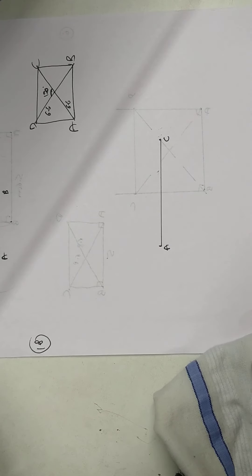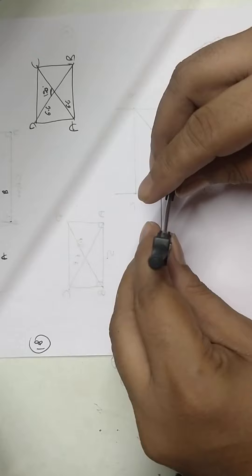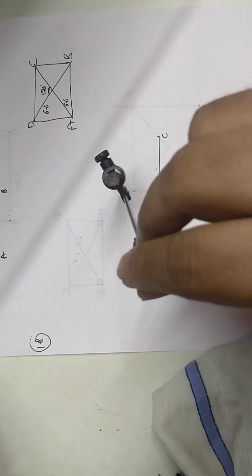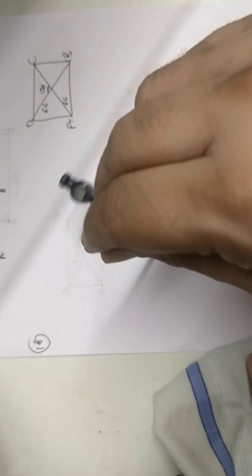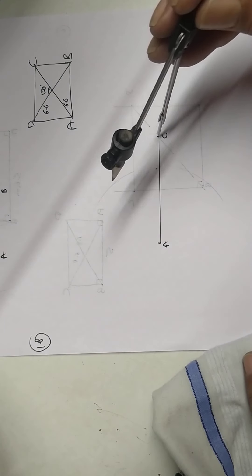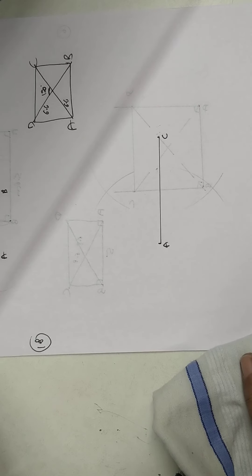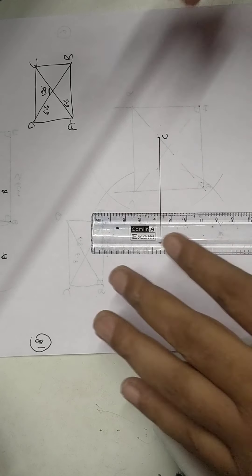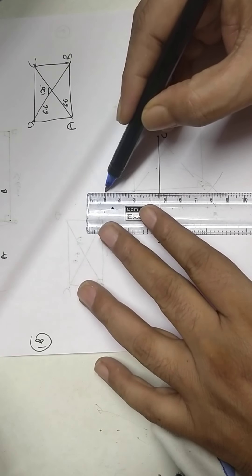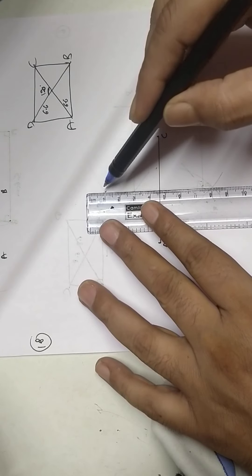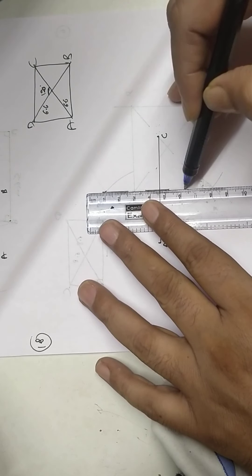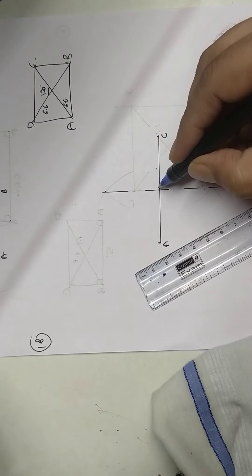Since diagonals bisect, draw perpendicular bisector to get the midpoint. Take more than half of AC. Cut arc up and down. Join this. This is my point O.